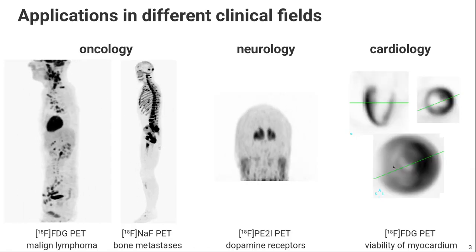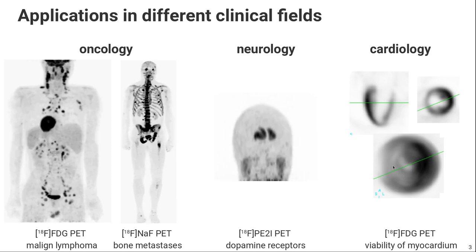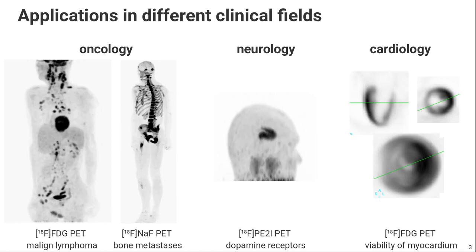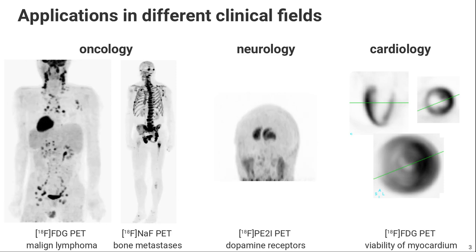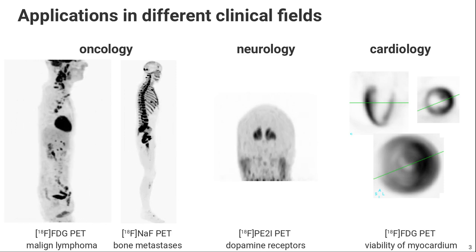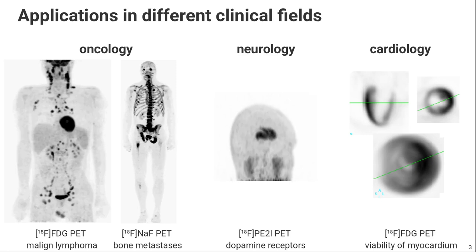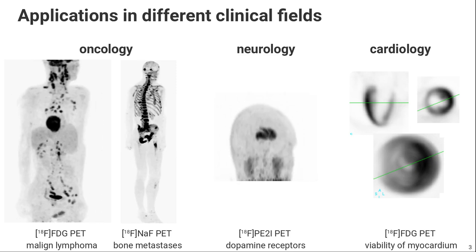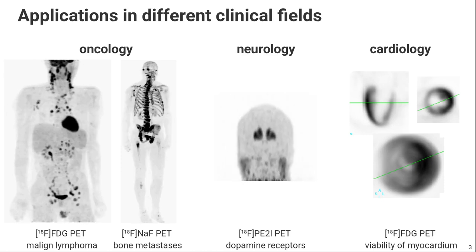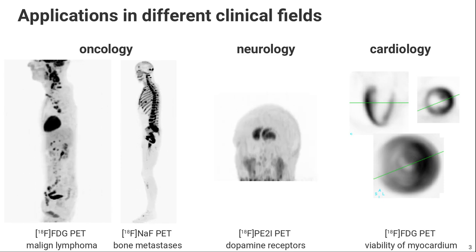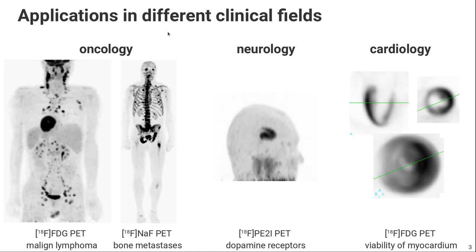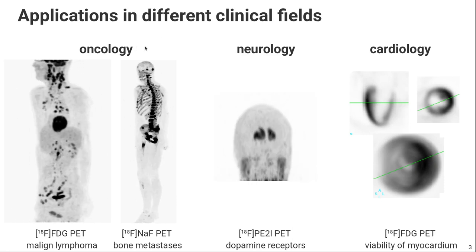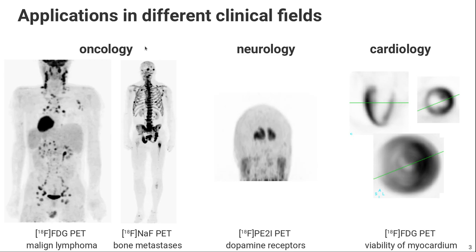The nice thing in nuclear medicine is that the contrast is produced by our radiotracer molecule. For different applications and clinical fields, there are many different molecules of interest we can use to generate different contrasts. The biggest field where nuclear medicine imaging is used is by far oncology — detecting or imaging tumors or metastases.